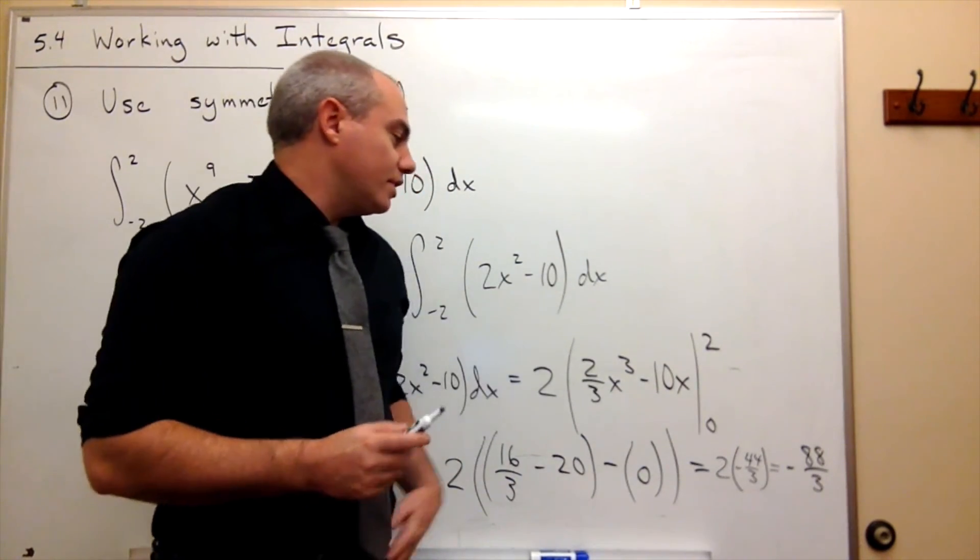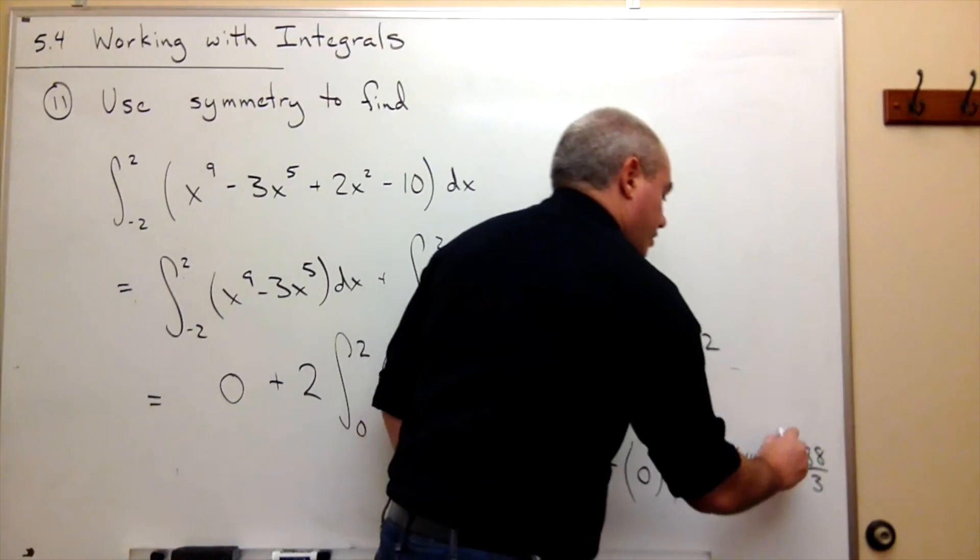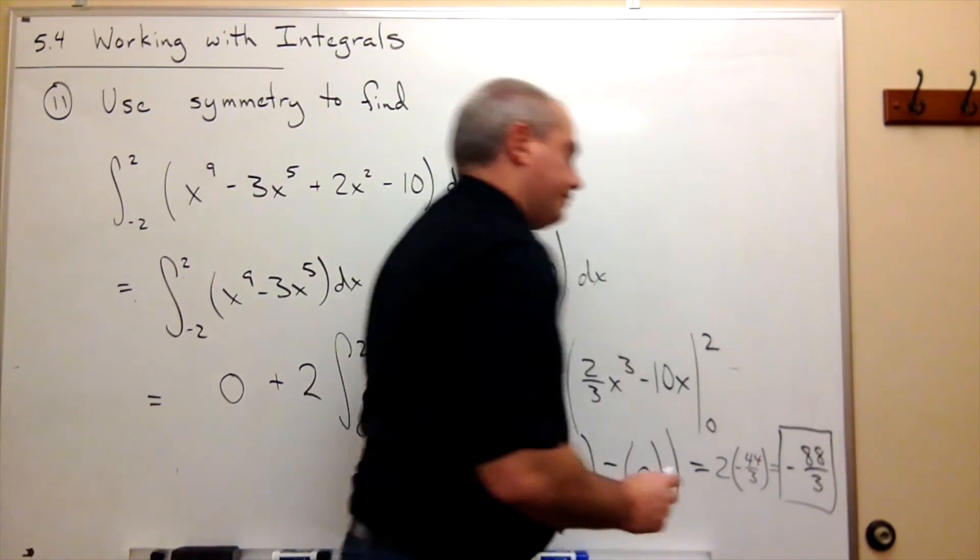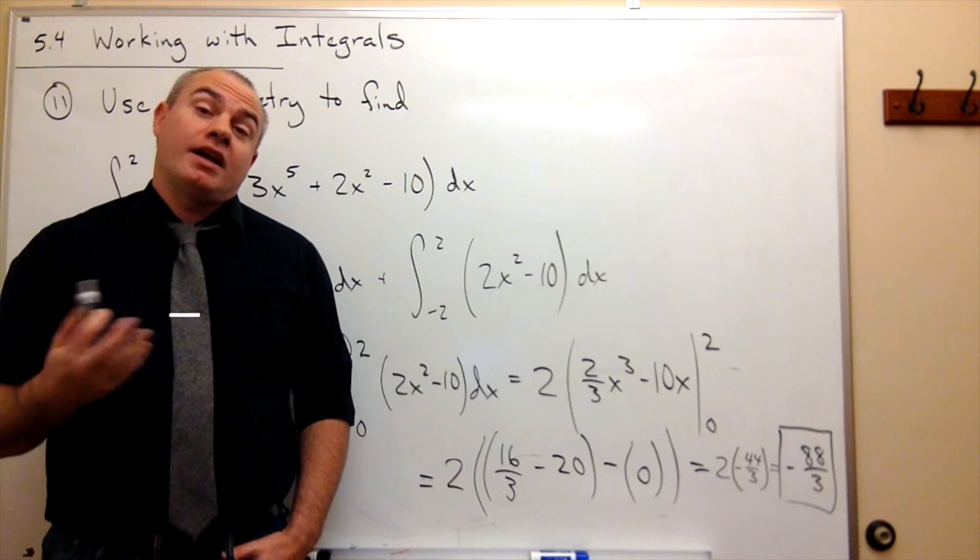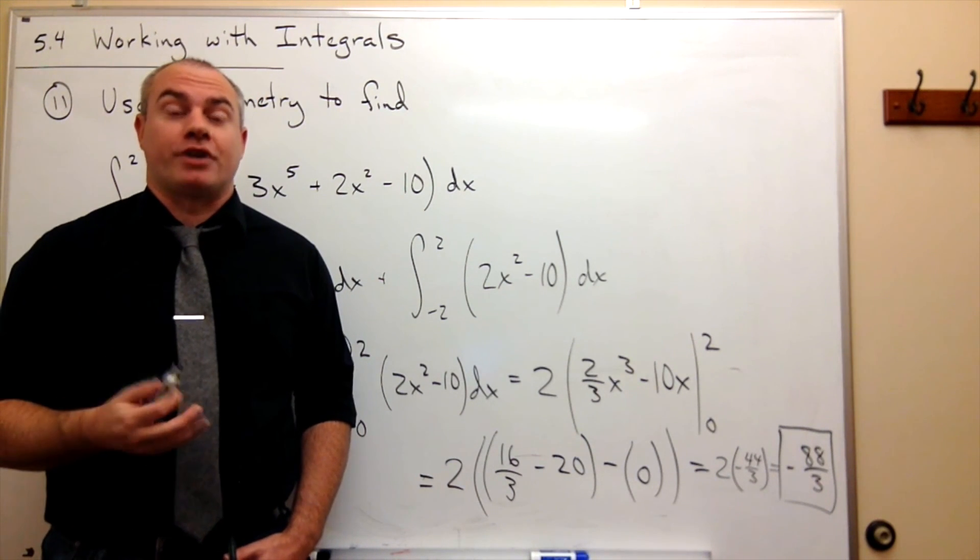And does that go in evenly? No, it does not. So I'll just leave it there. Negative 88/3 is my answer. And I was able to make it a little easier by looking at the symmetry.